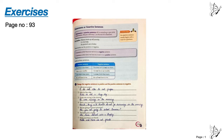Number one: I like to eat grapes. Answer: I do not like to eat grapes. Number two: Kala is a lazy dog. Answer: Kala is not a lazy dog. Number three: It was not raining in the morning. Answer: It was raining in the morning. Number four: David, Anuj and Karthik go swimming in the morning. Answer: David, Anuj and Karthik do not go swimming in the morning.